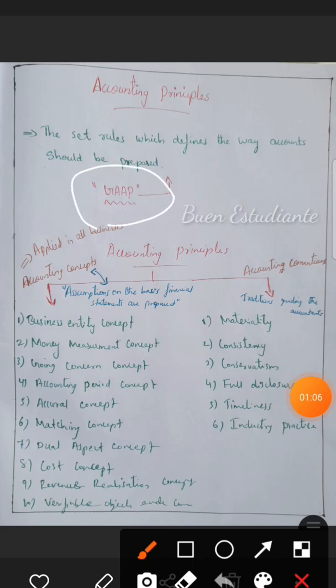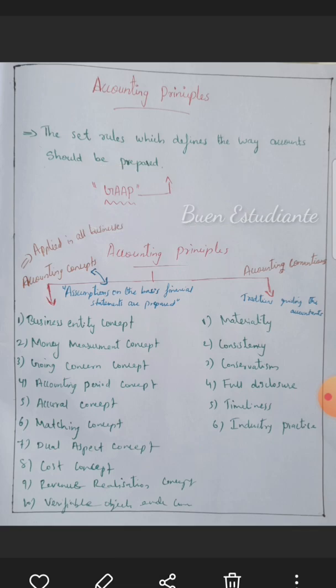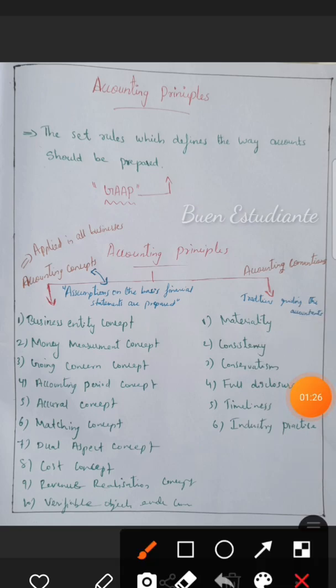GAAP stands for Generally Accepted Accounting Principles. It is a set of rules which defines the way accounts should be prepared. Accounting principles are classified into two: accounting concepts and accounting conventions.